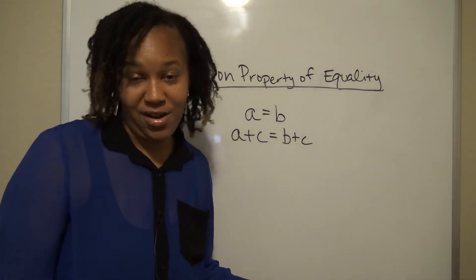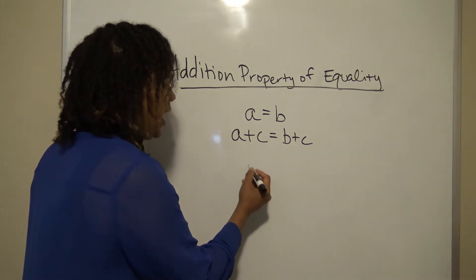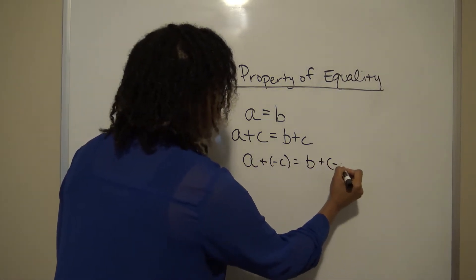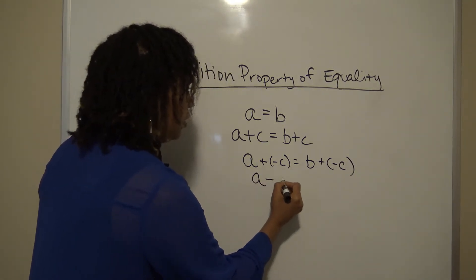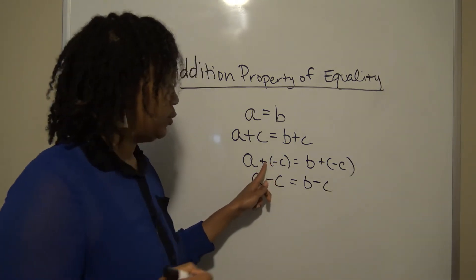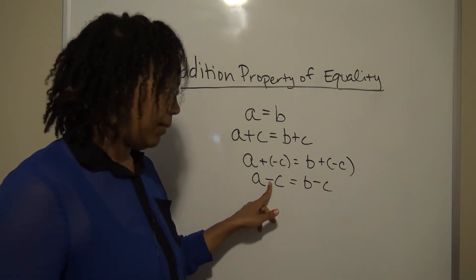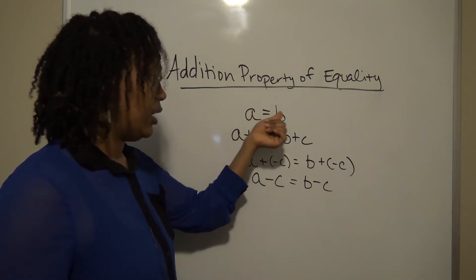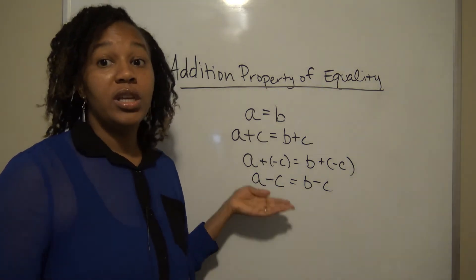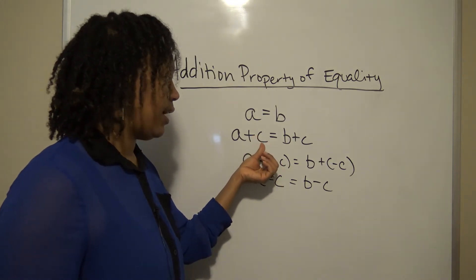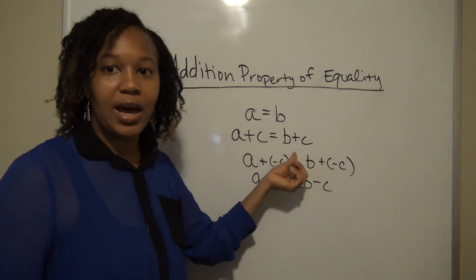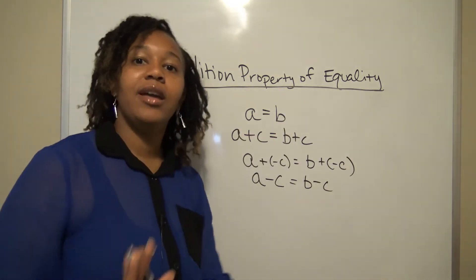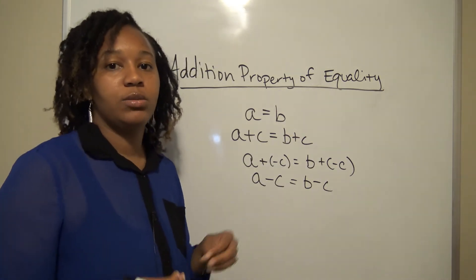Because subtraction is adding a negative, if you add a negative number to both sides, the statement is still equivalent. A positive plus a negative turns into a minus. So this property tells us: as long as you add or subtract the same number to both sides, you are not changing your equation. You can add the same number to both sides or subtract the same number from both sides and still have an equivalent expression.